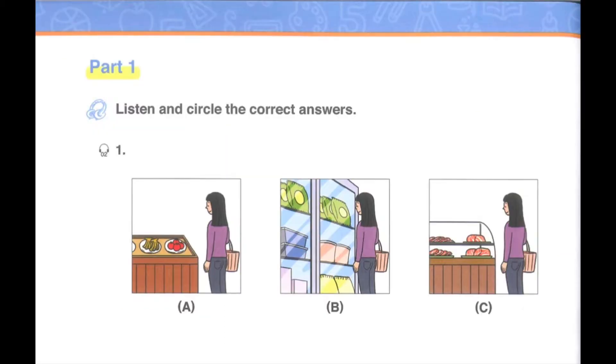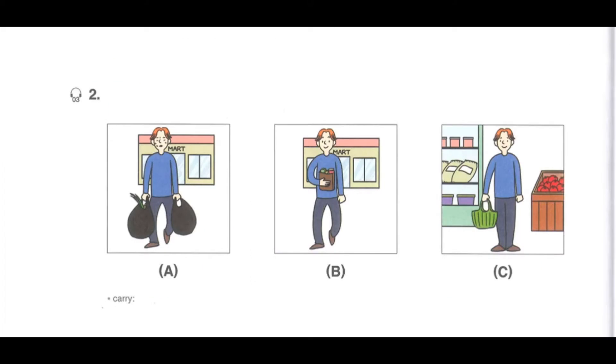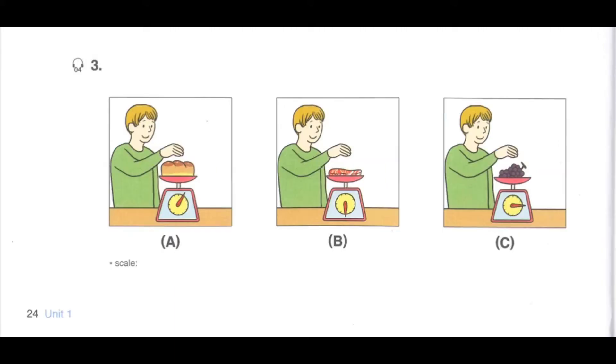Unit 1 At the supermarket. Part 1: Listen and circle the correct answers. Number 1: A woman is in the frozen food section. Number 2: A man is carrying plastic bags. Number 3: A man is putting some meat on the scale.